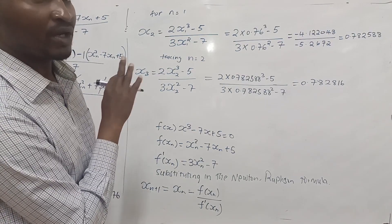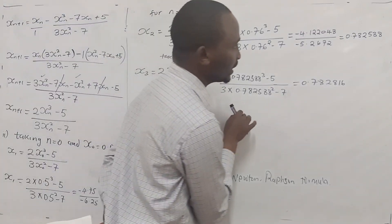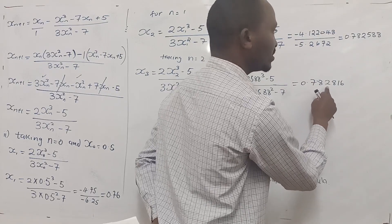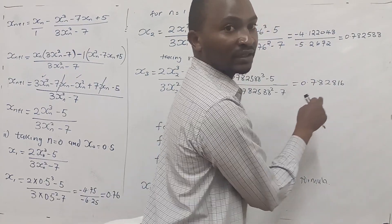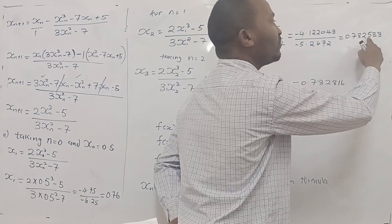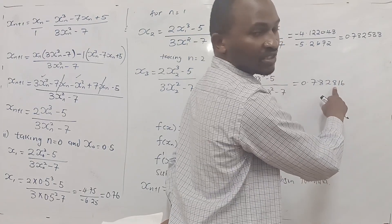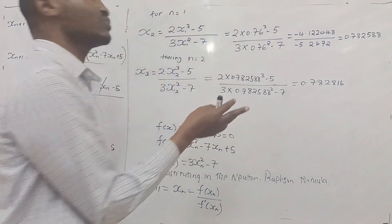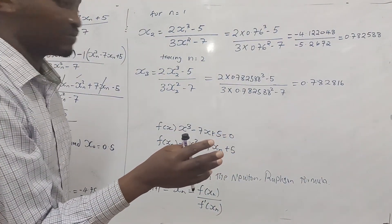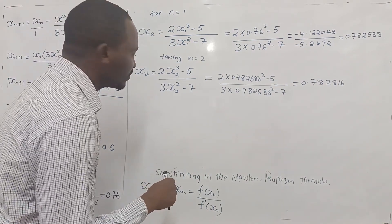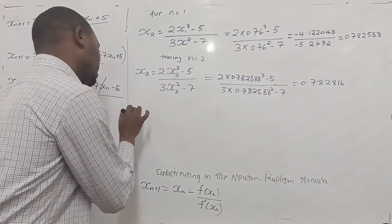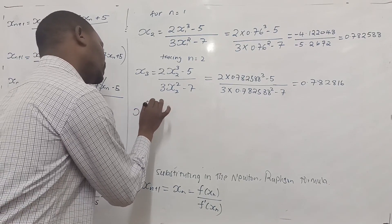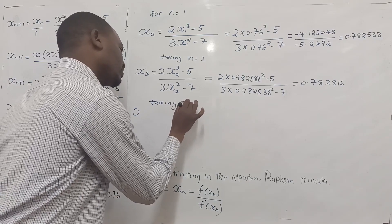You can see that by now, we are correct to 3 decimal places already: 0.782. We need to be correct to 4 decimal places, so we need the 4th decimal place to be consistent so that we can finish our iteration, because we have been told correct to 4 decimal places. Now taking n equal to 3, we compute x4.